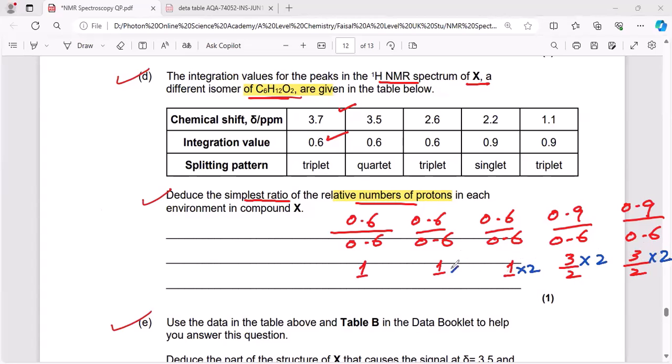Multiply this 1 with 2 as well. So your final answer will be 2 ratio 2, ratio 2, ratio 3, ratio 3.